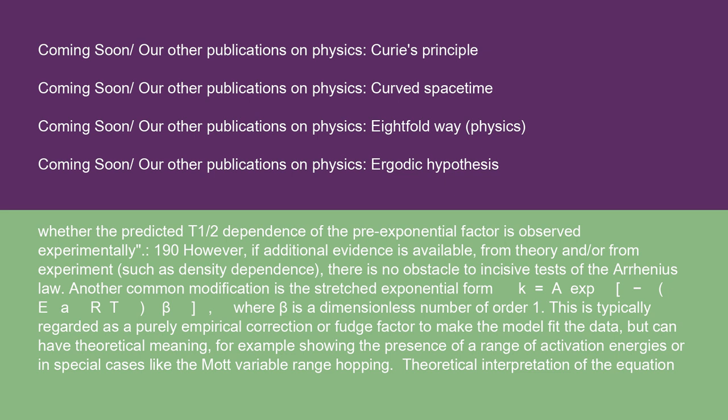Another common modification is the stretched exponential form K equals A·exp(-Ea/RT)^β, where beta is a dimensionless number of order 1. This is typically regarded as a purely empirical correction or fudge factor to make the model fit the data, but can have theoretical meaning. For example, showing the presence of a range of activation energies, or in special cases like the Mott variable range hopping.